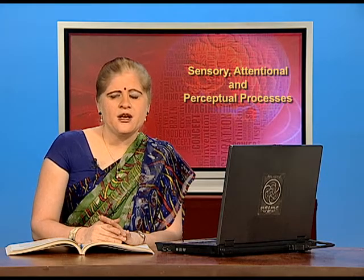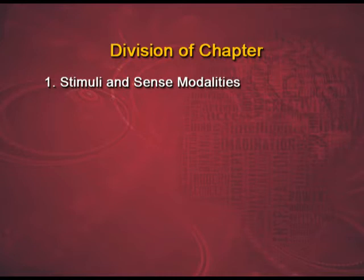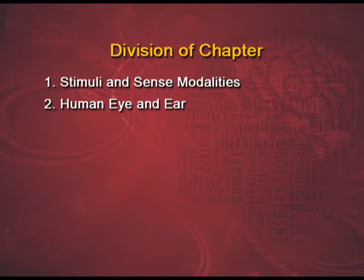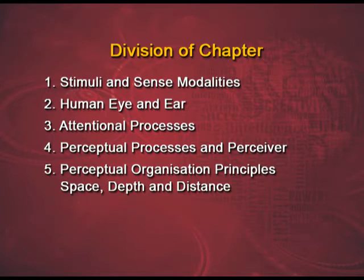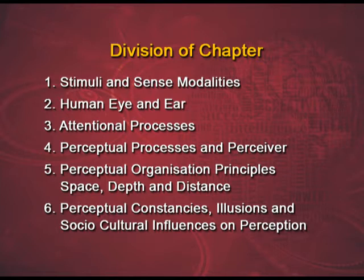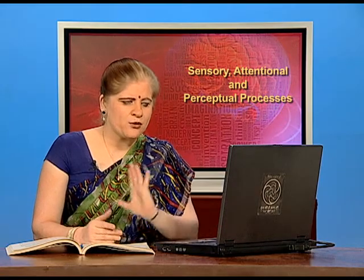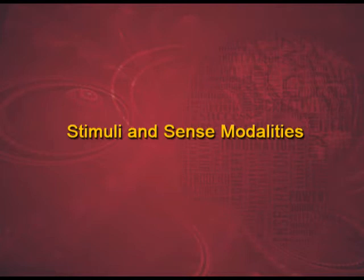For your convenience, we have divided this chapter into six parts. Part 1 covers stimulus and sense modalities. Part 2 shall deal with the human eye and ear and their functioning. In part 3, you shall learn about attentional processes. The perceptual processes and perceiver will be dealt with in part 4. The perceptual principles of organization are the content of part 5. And in the final part, you shall learn about illusions, constancies and the socio-cultural factors that influence the perceptual processes of a human being. So let us begin with part 1, which is the stimuli and the sense modalities.